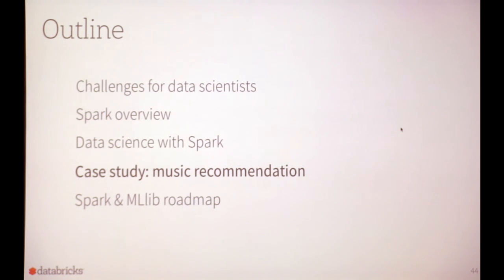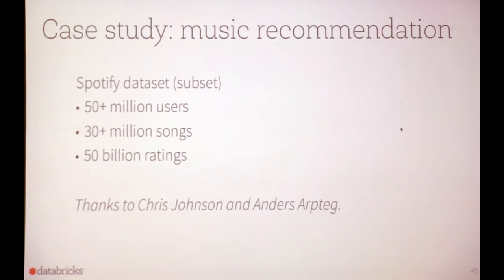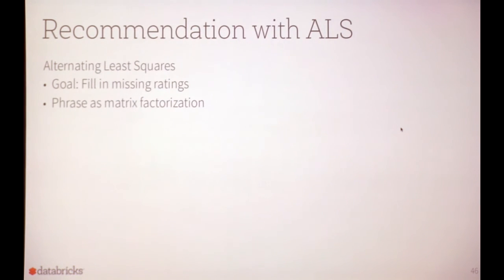In the remaining time I'd like to mention a case study on music recommendation. This is on a Spotify dataset — just a subset of their data — with about 50 million users, 30 million songs, and 50 billion ratings. We want to recommend songs to users, and the algorithm we're going to use is Alternating Least Squares, or ALS. We phrase this as a matrix factorization problem: we have a big matrix of users by songs, with entries indicating ratings such as three stars for a happy user. There are many missing entries in this matrix, and that's the information we need to make recommendations — we need to infer ratings for songs users haven't heard yet.